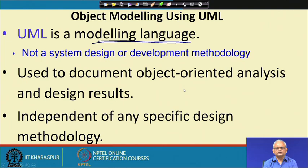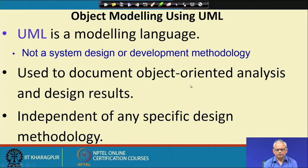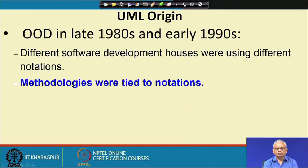UML is used for documenting the design, but the design can be obtained using any methodology — we can always document using UML. The object oriented design was first used in the 1980s, and when it came up, different researchers proposed different methodologies.